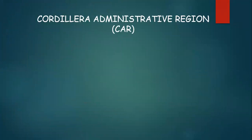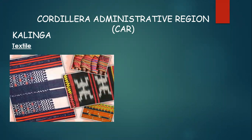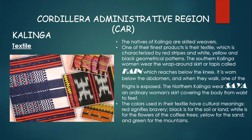The next art can be found in the Cordillera Administrative Region. Most of the people there are skilled weavers. One of their finest products is their textile, characterized by red stripes and white, yellow, and black geometrical patterns. The Southern Kalinga women wear a wrap-around skirt or tapis called kain, which reaches below the knee, worn below the abdomen, and when they walk, one of the thighs is exposed. The Northern Kalinga wear saya, an ordinary woman's skirt covering the body from waist to feet.